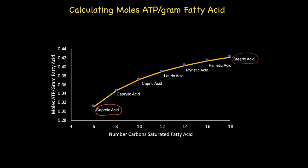If we compare the percentage increase in energy density per gram for each of these fatty acids against caproic acid, it quickly becomes clear the significance of carbon chain length, with stearic acid having 36 percent more energy in terms of ATPs per gram than caproic acid. So in summary, the longer the carbon chain, the greater the energy density in terms of moles of ATP per gram of fatty acid.